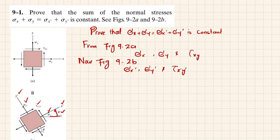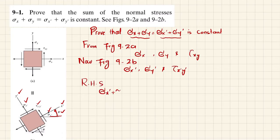We have to prove that σx + σy equals σx' + σy'. We will take the right-hand side of the equation, which is σx' plus σy'.